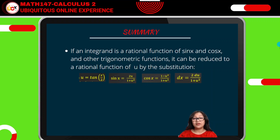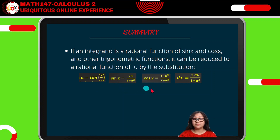In summary, if an integrand is a rational function of sine and cosine or other trigonometric functions, it can be reduced to a rational function of u using the following substitution: u equals tangent of x over 2; sine x equals 2u over 1 plus u squared; cosine x equals 1 minus u squared over 1 plus u squared; and dx equals 2 du over 1 plus u squared.